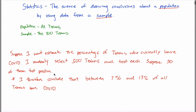So how would I test you on this? If I give you a quiz at the end of this week, I would give you a scenario like what you see in red here, and ask you questions like what you see in green: what's the population? You'd say it's all Texans. What's the sample? You'd say the 500 Texans that you tested for COVID. Great — then you understand sample and population.